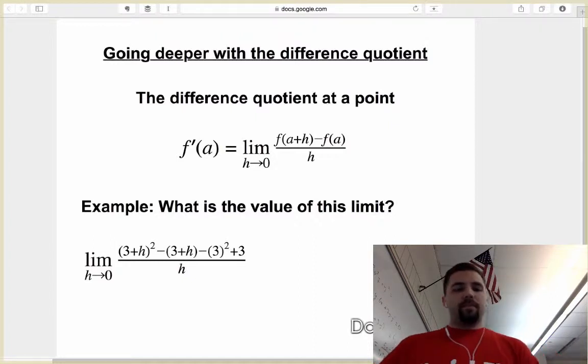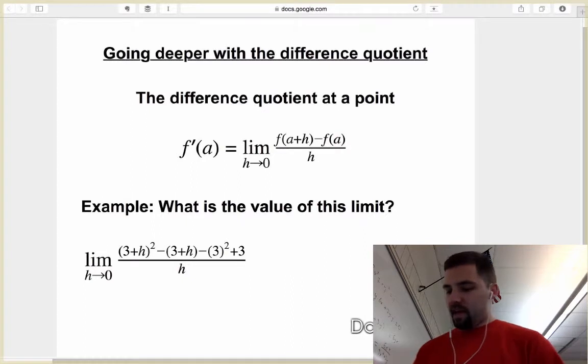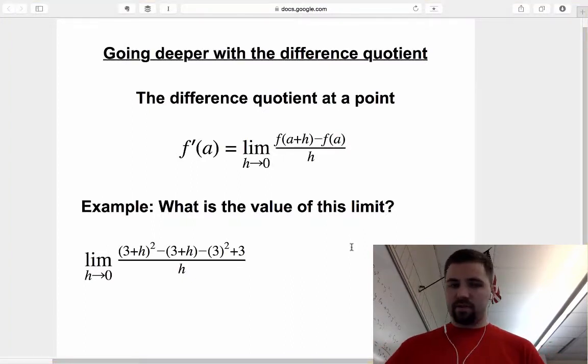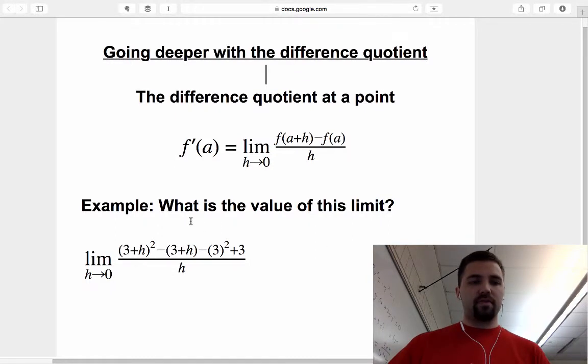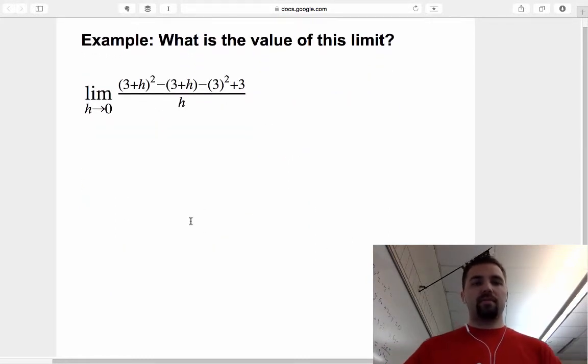And so what that means is that when we have examples like this, we can actually pull more information out of that example without kind of having to do a bunch of obnoxious algebra that we did early on in this chapter. So let's look at this example right here, this limit as h approaches 0 of 3 plus h squared minus 3 plus h minus 3 squared plus 3.